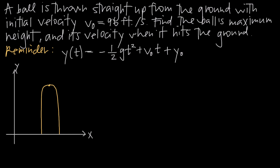We've been asked to find the ball's maximum height and its velocity when it comes back down and hits the ground. The equation we're going to use to model the position function is y of t equals negative one-half times g, the gravitational constant, times t squared, plus v-zero, the initial velocity, times t, plus y-zero, which is the initial position.